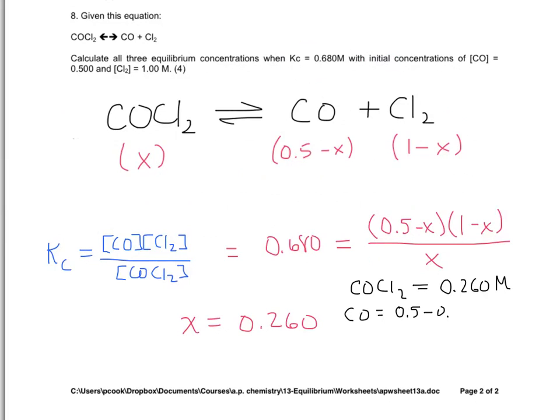For carbon monoxide, well its original concentration was 0.5 and we subtract X from it, and so we get a concentration of 0.240 molar. And finally, for chlorine gas, it was originally 1 molar, subtract X, and we get an equilibrium concentration of 0.740 molar.